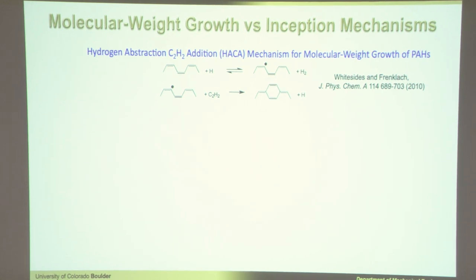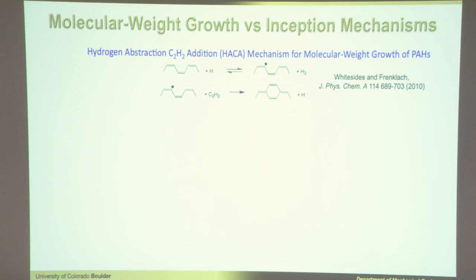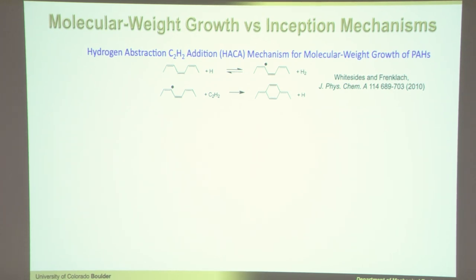Acetylene is one of the most concentrated species in a flame — you generate a lot of it, so it's usually floating around. Once you abstract a hydrogen from your carbon, acetylene can attach where you abstracted the hydrogen — at that radical site — and add two carbons with the hydrogen coming off. The chemical reaction looks like: whatever hydrocarbon species you have, plus a hydrogen abstracted, you end up with that radical plus H2. Then in the second step, acetylene attaches to that carbon with release of an H atom. In some cases you just generate a chain, then a second acetylene comes in and makes a six-membered ring.